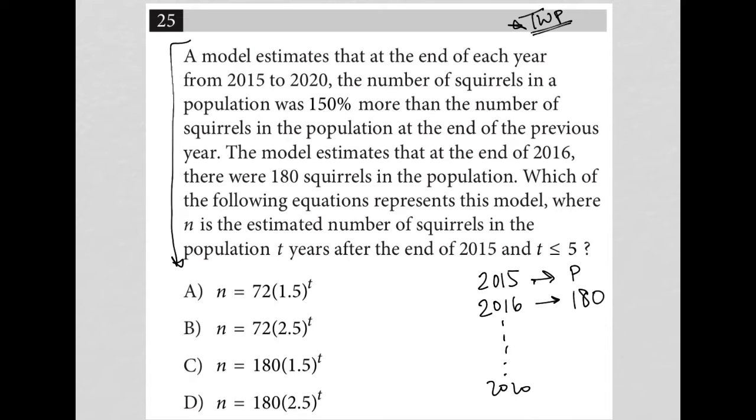Next sentence: Which of the following equations represents this model where N is the estimated number of squirrels in a population? So we know these, at least for 2016, would all be 180s. I'm going to just do this for my own sanity here. I know I want N to be 180 for the year 2016, in the population T years after the end of 2015.